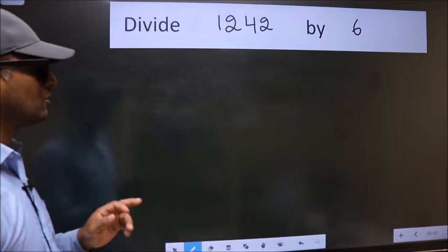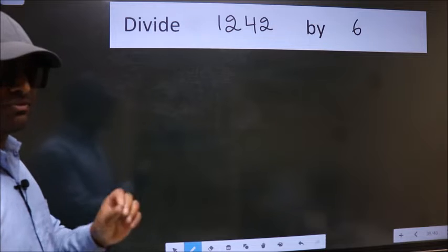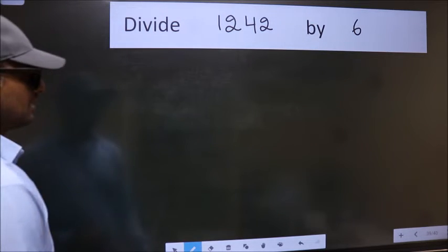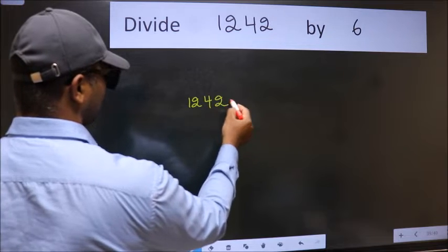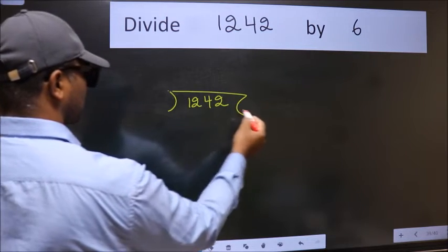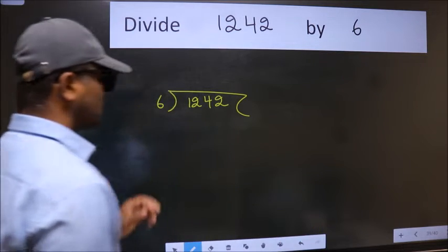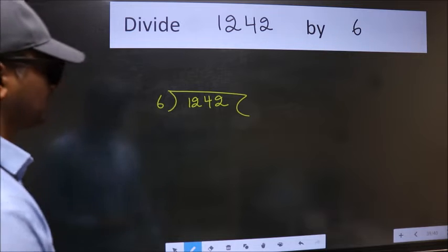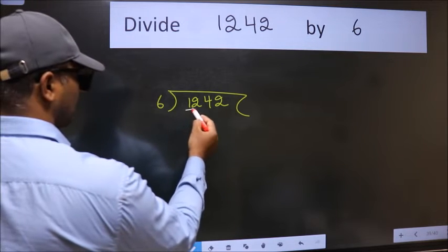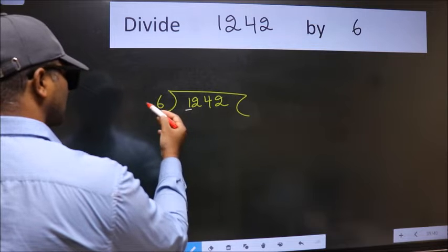To divide 1242 by 6, we frame it this way: 1242 here, 6 here. This is step one. Next, we have 1 here and 6 here. 1 is smaller than 6.